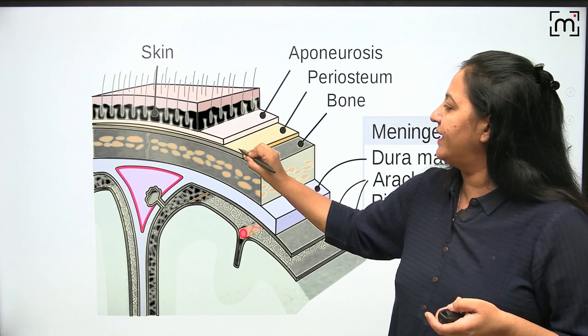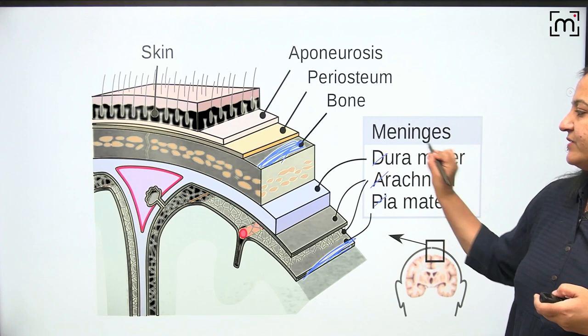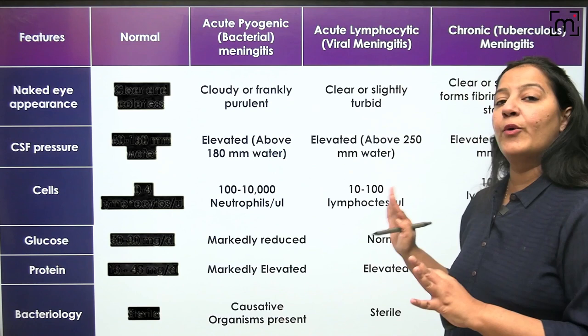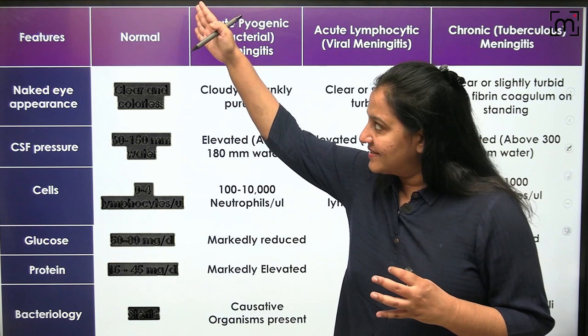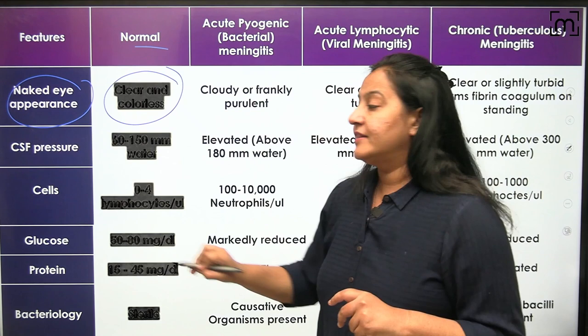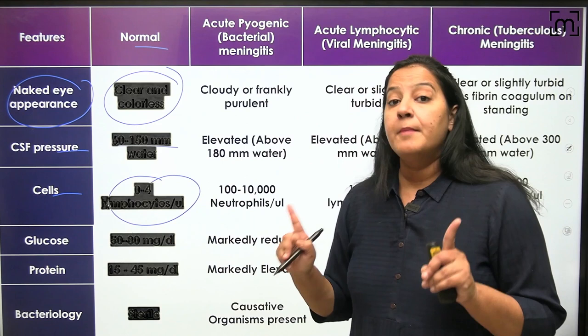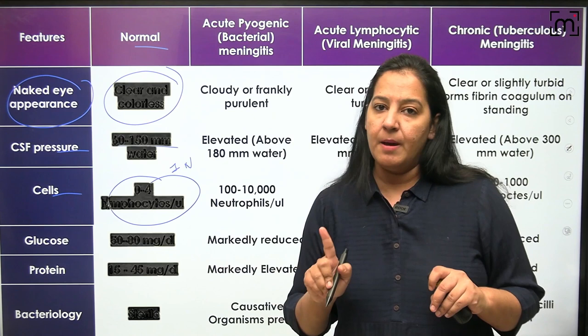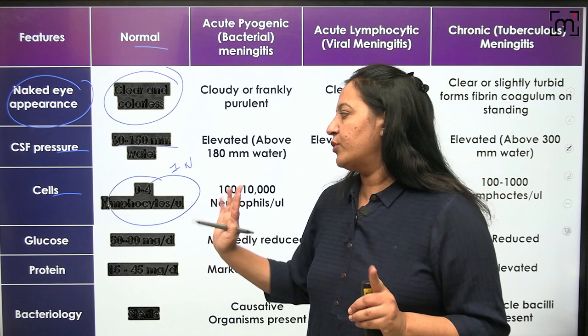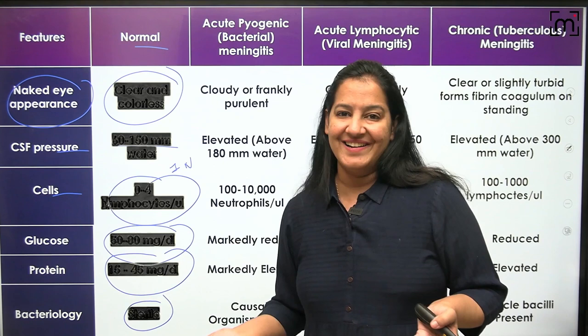This master table shows normal CSF features. The naked eye appearance is clear and colorless. Pressure is 60–150 mm of water. Normally CSF has 0–4 lymphocytes per microliter — no neutrophils at all. Even a single neutrophil is pathognomonic for meningitis. Glucose is 50–80 mg/dL, protein is 15–45 mg/dL, and normal CSF is sterile.